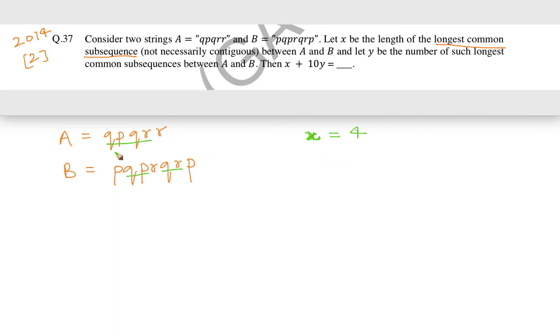But how many such longest common subsequences are possible? In this case, we have to see how many common subsequences of length 4 are possible, because the longest one will be of length 4. We have to see how many of them will be there—that is going to be Y. One is definitely QPQR. This one is definitely there.